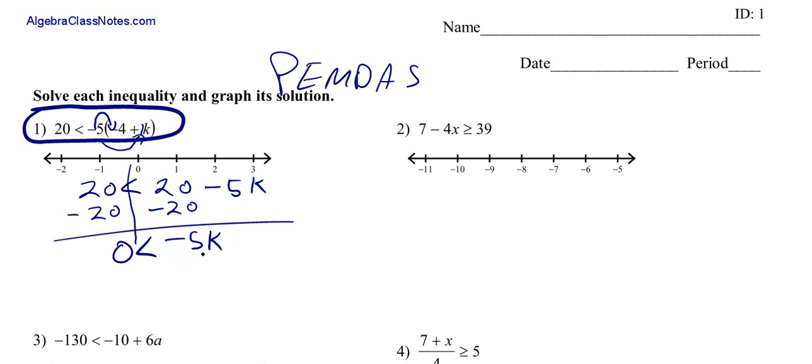We're going to divide both sides by negative 5. The reason we're dividing by negative 5 is because you've got negative 5 times k. To undo that operation, you do the inverse, and the inverse of multiplication is division. Negative 5 divided by negative 5 is just 1, or k. And 0 divided by negative 5 is 0. But what do we do with this inequality? Since we divided both sides by a negative number, we've got to flip it.